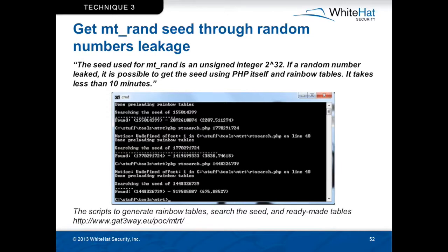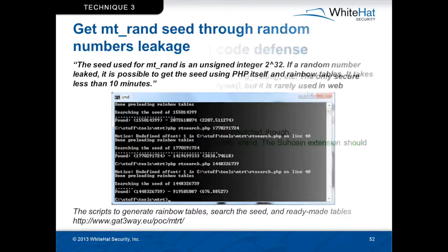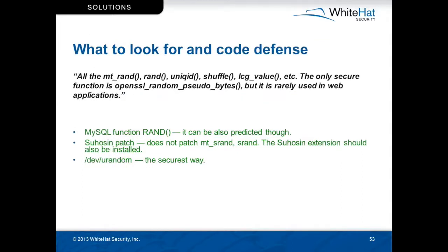On slide 53, some advice on what to look for in vulnerable code: look at all the mt_rand, rand, uniqid, shuffle, and LCG value functions. The only secure function — and this is their word, I can't fully verify it — is OpenSSL_random_pseudo_bytes, but this is rarely used in web applications.